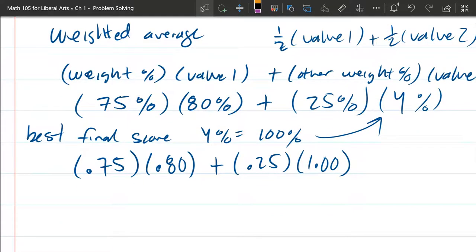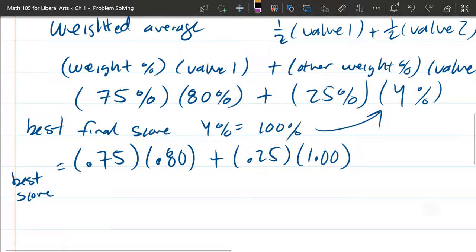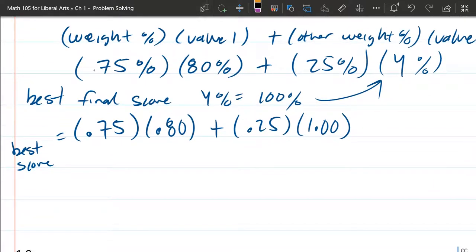Alright, so we're going to multiply all these out, and this is the best score in the class. You do need to multiply all those out. They also want it in a percentage. The actual value they want is going to be as a percentage, not as a decimal. So just be aware of that. You're going to get the decimal, you've got to turn it back into a percent.